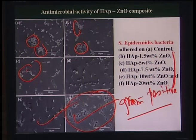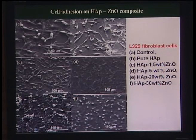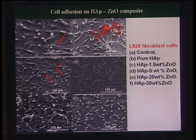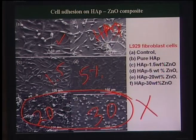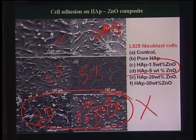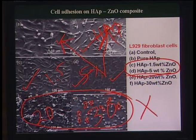However, for cell adhesion on HAP–ZnO composites, at 20 and 30% ZnO cells become spherical in shape, indicating apoptosis — cells die in contact with high ZnO content. At ≤5–8% ZnO, cell proliferation and cellular processes are comparable to pure hydroxyapatite. This reveals a trade-off: high ZnO content gives good antimicrobial property but poor cytocompatibility, while low ZnO content preserves cytocompatibility but has limited antimicrobial effect.